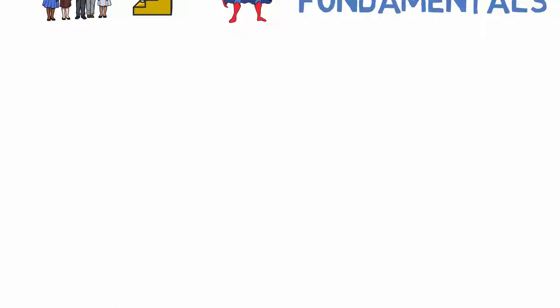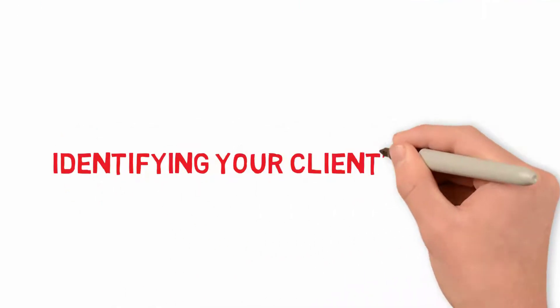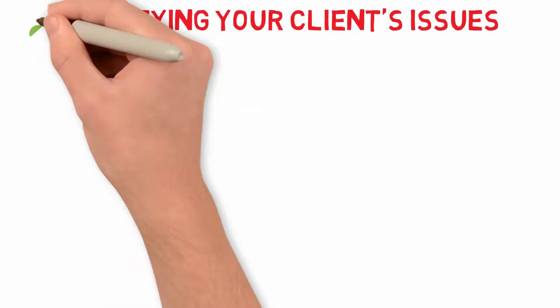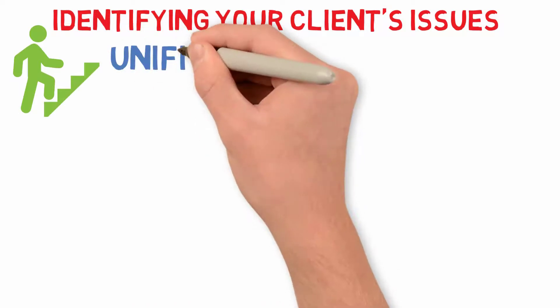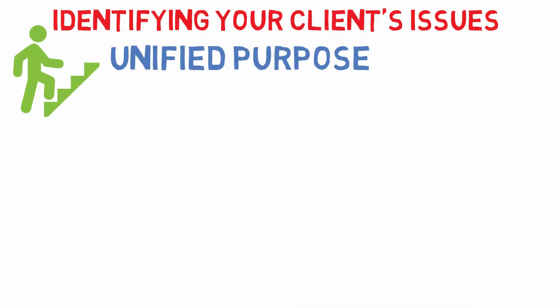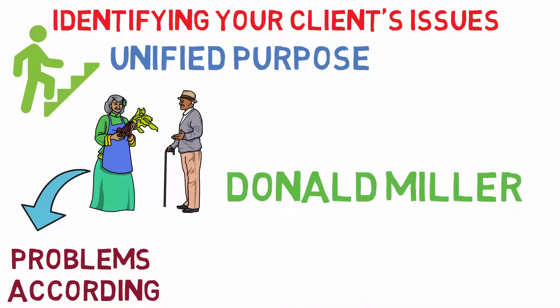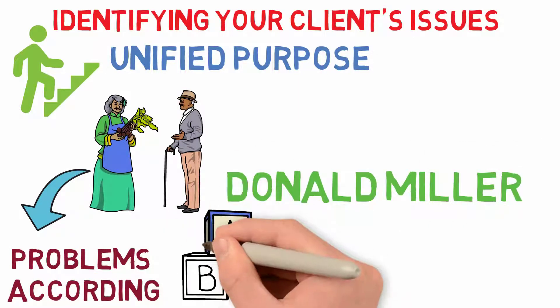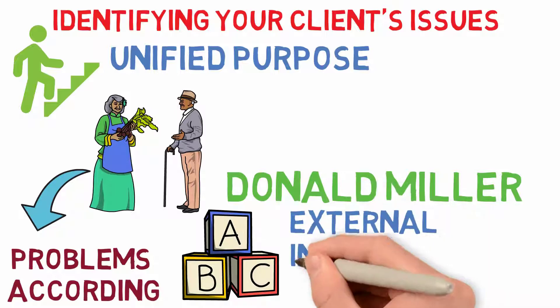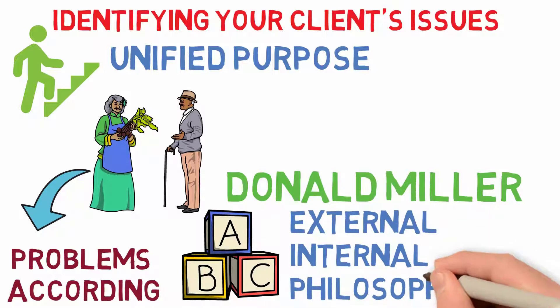Identifying your client's issues is the first step in creating a unified purpose. Customers experience three sorts of problems. According to Donald Miller, founder of Story Brand and author of Building a Story Brand: external, internal, and philosophical.